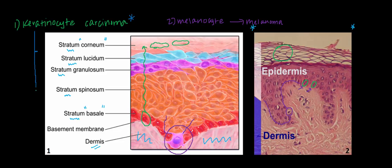If keratinocyte carcinoma arises from any of the keratinocytes in the basal cell layer, we call it, appropriately, basal cell carcinoma, or BCC for short.